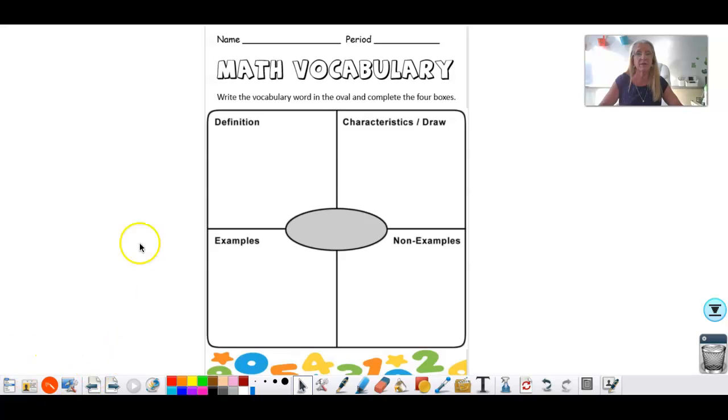If you will look in your math binder under the vocabulary tab, you should have this sheet. If you don't have the sheet, if you're at home, just take a regular piece of paper and kind of draw it or make sure that you at least have these four sections.